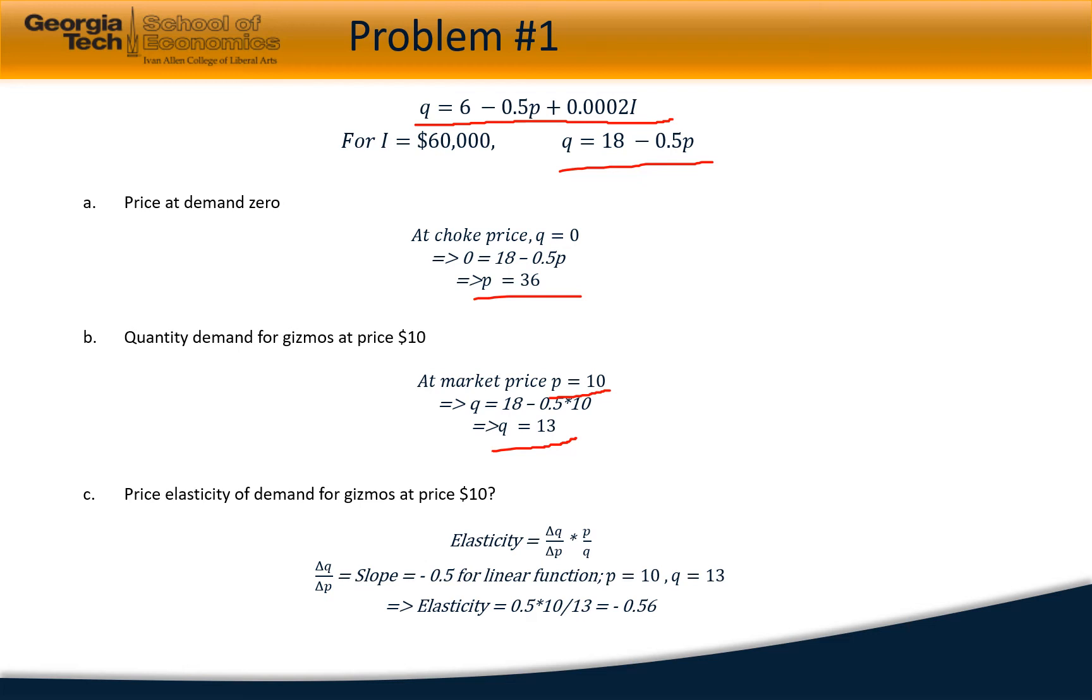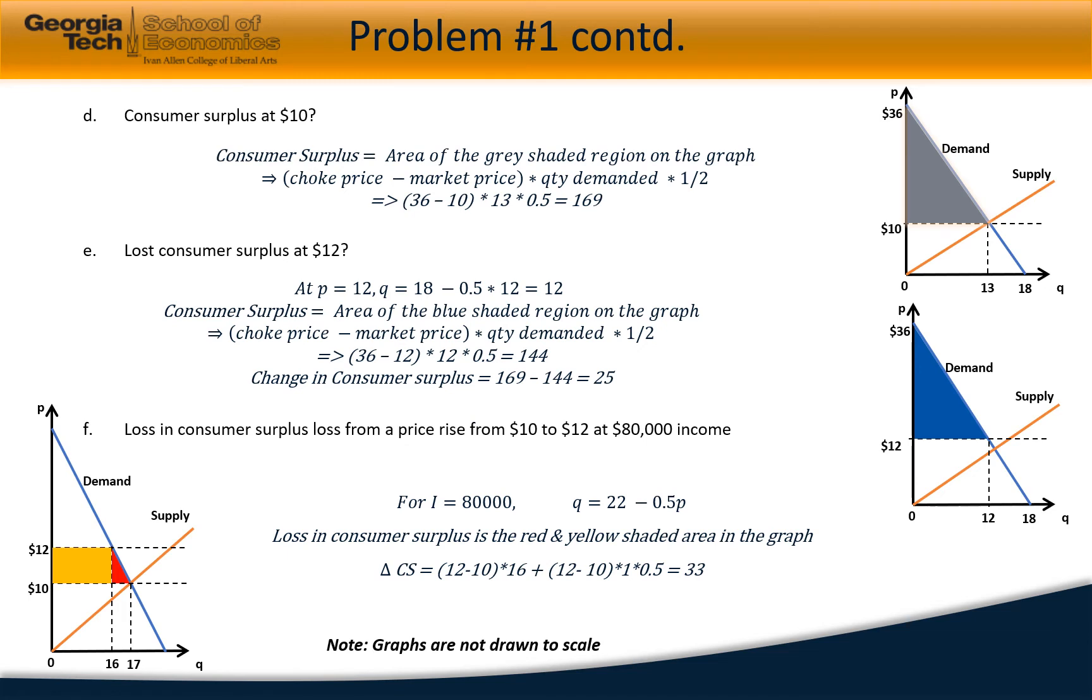This is negatively sloping, and at p equals 10, q turns out to be 13, so the elasticity is minus 0.56. The consumer surplus at $10 is the region below the demand line and above the price line, which is graphically the gray shaded area bounded by $36 on the price axis and $10, while 0 and 13 on the quantity axis. That turns out to be 169.